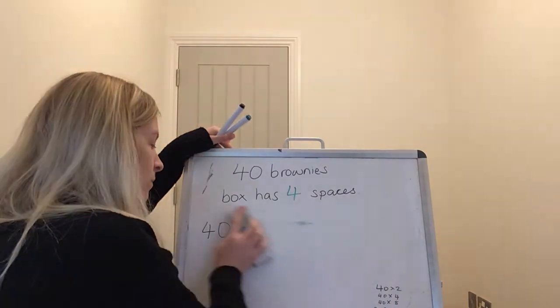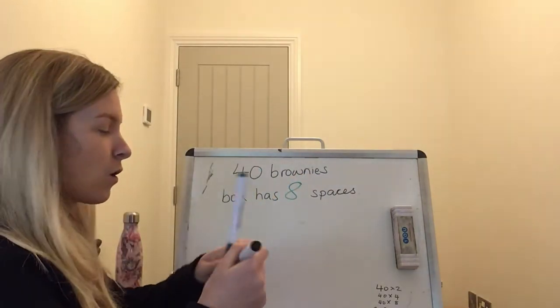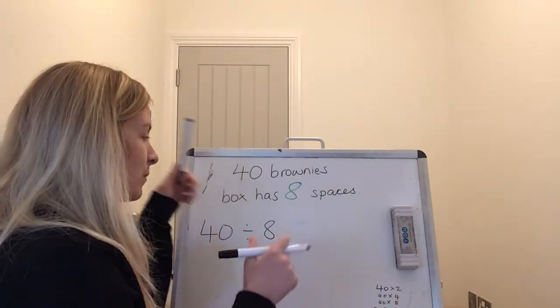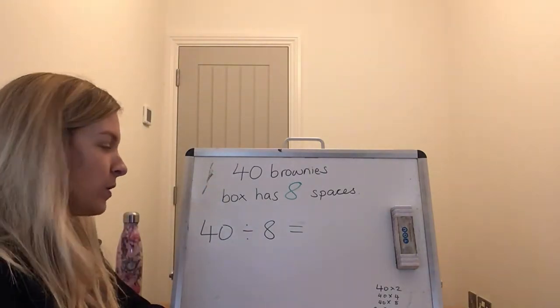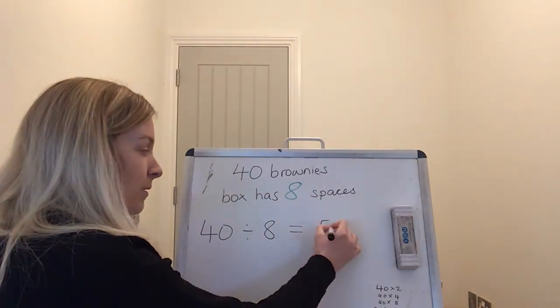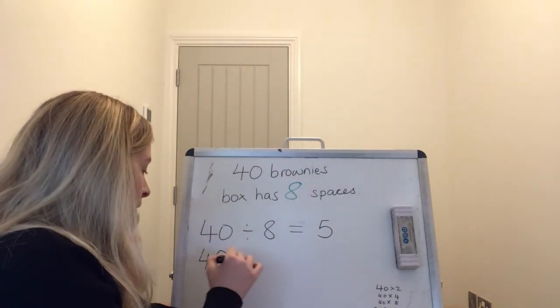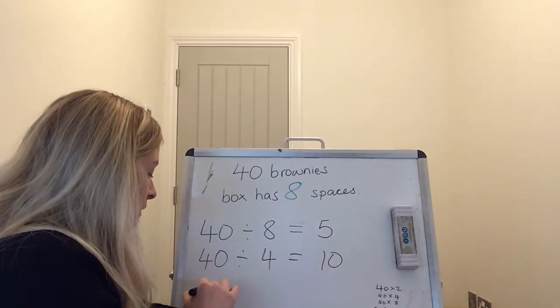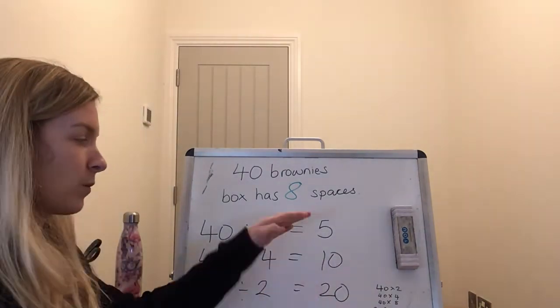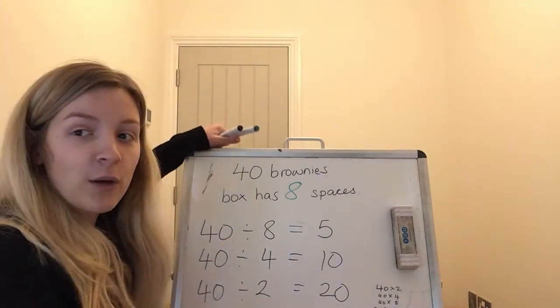Last but not least, what if he decided? No boxes of 4, boxes of 8 this time. 40 brownies divided into 8 spaces is going to give us the number of boxes that we will need. 40 divided by 8. How many 8's are there in 40? 5. Now, you see that relationship. We had 40 divided by 4 was 10 and 40 divided into boxes with 2 spaces was 20. We're doubling it. We're doubling it every time. See that relationship? You have a question very similar to that and do have a go at it.